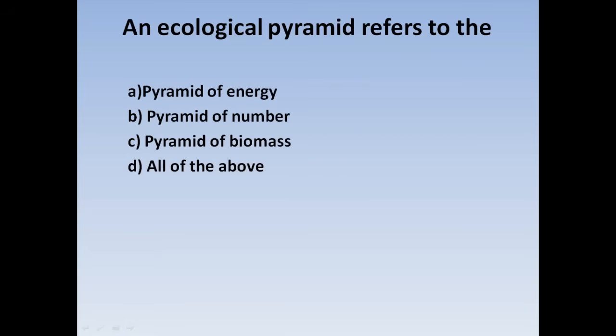Next question: An ecological pyramid refers to — Option A: Pyramid of energy, Option B: Pyramid of number, Option C: Pyramid of biomass, Option D: All of the above. An ecological pyramid can refer to pyramid of energy, pyramid of number, and pyramid of biomass. Correct answer: Option D, all of the above.